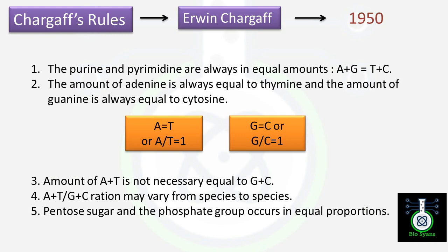A plus G equals T plus C, and the amount of adenine is always equal to thymine, and the amount of guanine is always equal to cytosine. But he also mentioned that the amount of A plus T is not necessarily equal to G plus C, and the ratio he provided for A plus T by G plus C varies from species to species. This is the asymmetric ratio: if it is more than one, it is found in higher organisms, but if it is less than one, it is found in lower organisms.